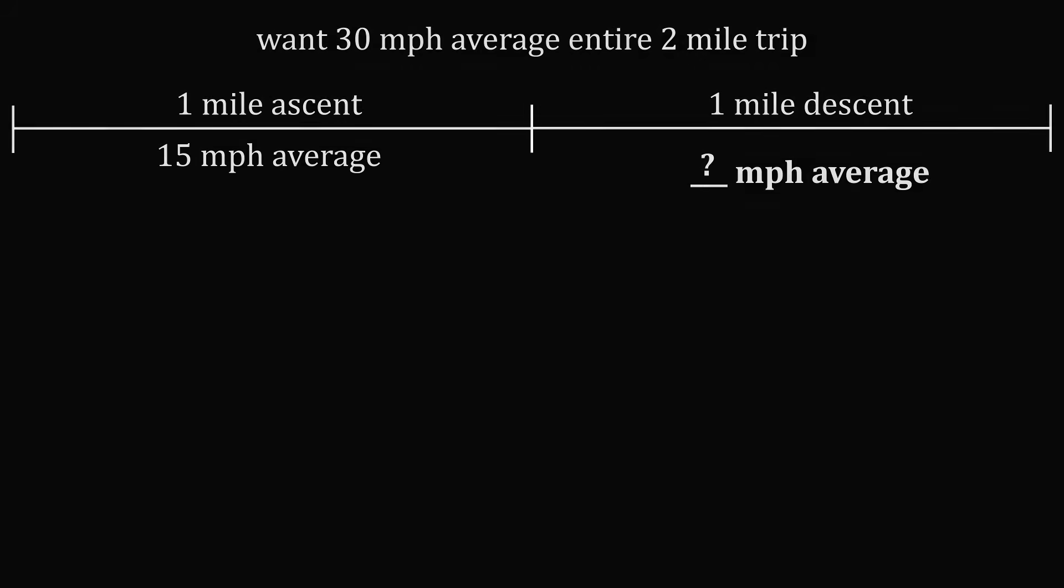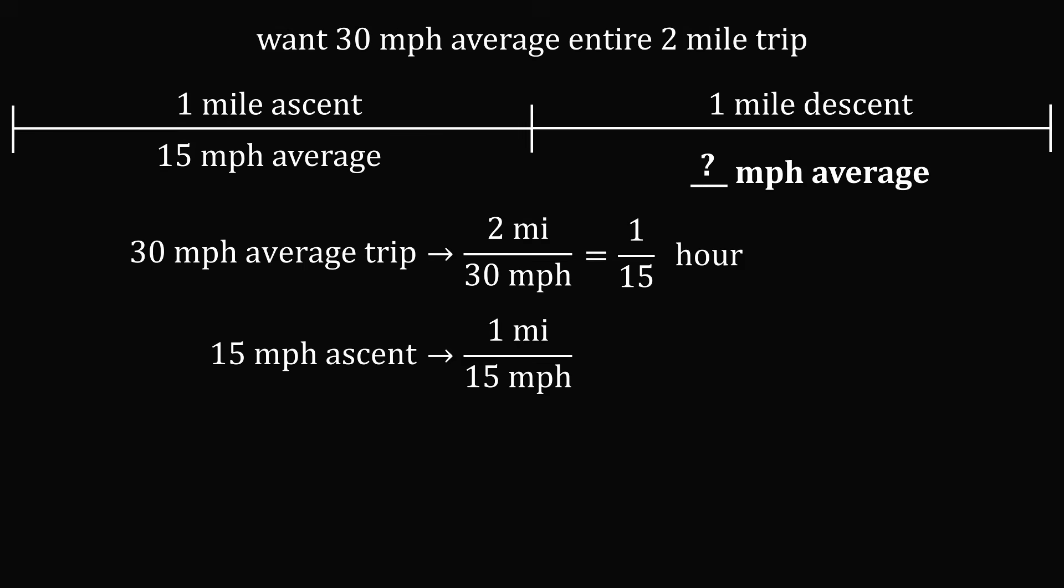Let's try to understand the problem in another way. If we need a 30 mile per hour average for the entire trip, how much time do we need to spend? We know we have a 2 mile distance and we want an average of 30 miles per hour. So we must spend 1 over 15 hours for the entire trip. How much time does it take us to go just on the ascent? Going at 15 miles per hour for 1 mile will take exactly 1 over 15 hours. So we've used up all the time on the ascent and there's no time left over for the descent.